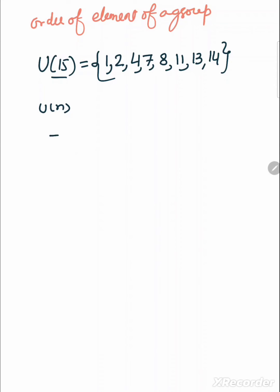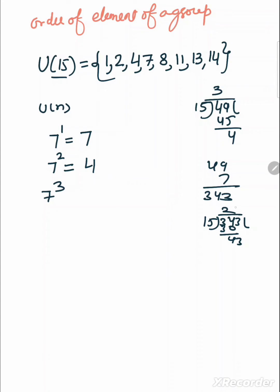Let's take 7. Order of 7: first, 7 raised to power 1 equals 7. 7 raised to power 2 equals 49, and applying 15 modulo, 15 goes into 45, this is 4. 7 raised to power 3: this is 49 into 7, 343, and applying 15 modulo, this is 13.